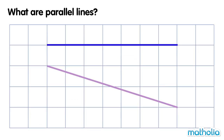Look at the lines on the grid. At one end, the distance between the lines is one grid square. At the other end, the distance between the lines is three grid squares.